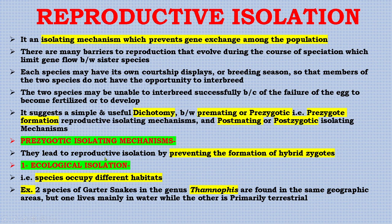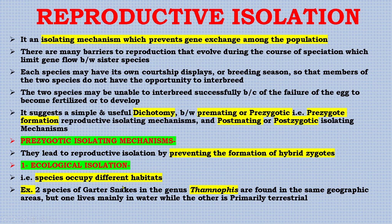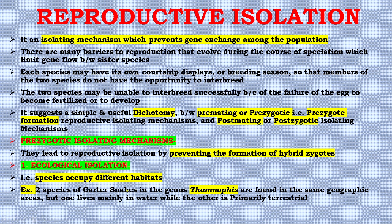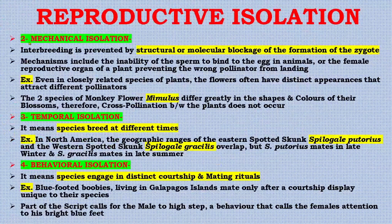Pre-zygotic isolating mechanisms prevent the formation of hybrid zygotes. The first type is ecological isolation, meaning species occupy different habitats. For example, two species of garter snakes of the genus Thamnophis are found in the same geographic areas, but one lives mainly in water while the other is primarily terrestrial in nature.